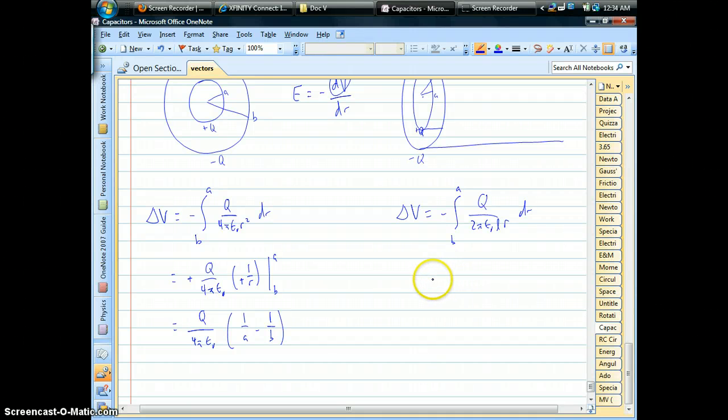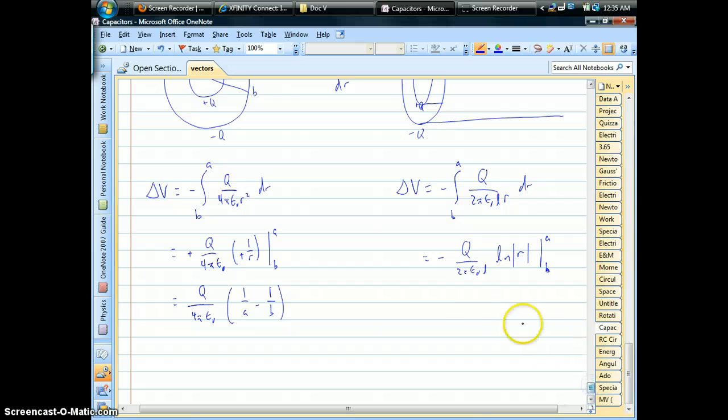we're going to have one over A minus one over B. On the right, for cylinders, we're going to end up with our constants that get pulled out of the integral. We have one over r is left within the integral. So, that's going to be a natural log of r.